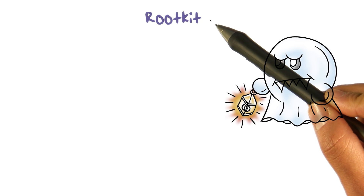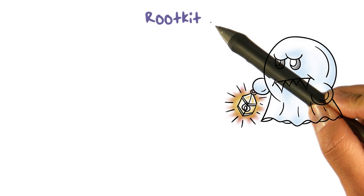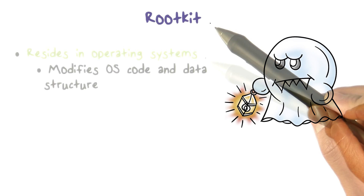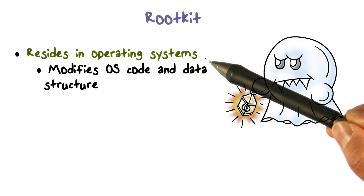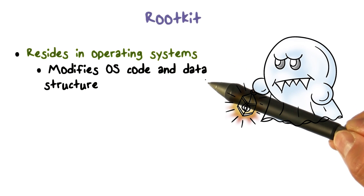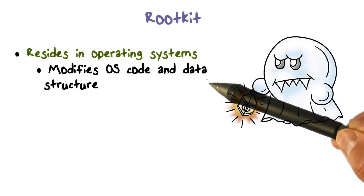Now, let's discuss a special kind of memory resident virus called a rootkit. A rootkit is embedded in an operating system. It typically modifies some of the code and even data structures of the operating system in order to perform some malicious activities.